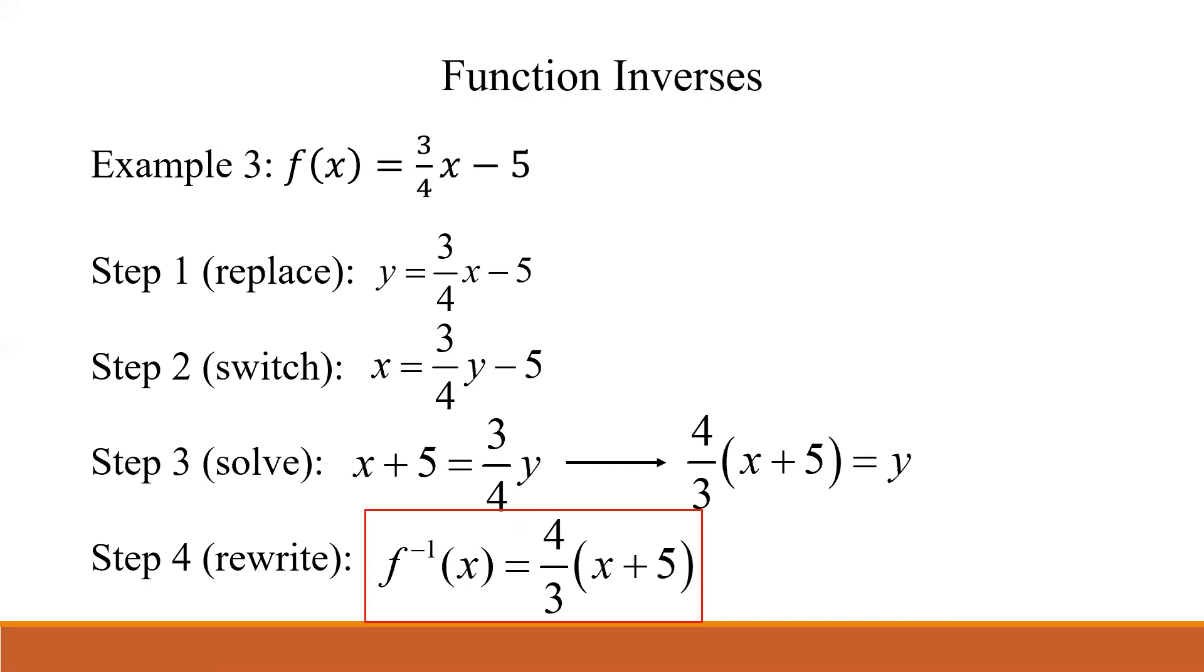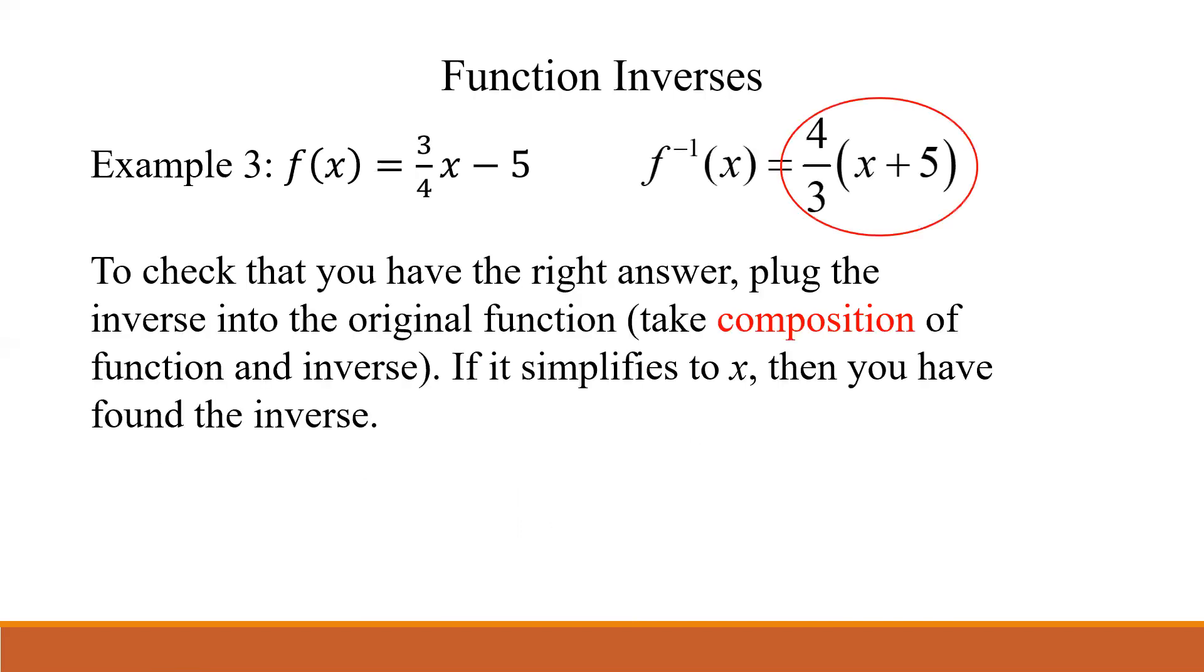Add 5 to both sides first. And if you have a coefficient there, just multiply by the reciprocal. The reciprocal would be 4/3. So multiply that on both sides, and that's going to be your inverse. Then rewrite that with your inverse notation, and that's your answer. And again, hopefully you checked that answer yourself. Take that whole thing, plug it into the x. The coefficients, 3/4s and 4/3, they cancel out and just leave me with x.